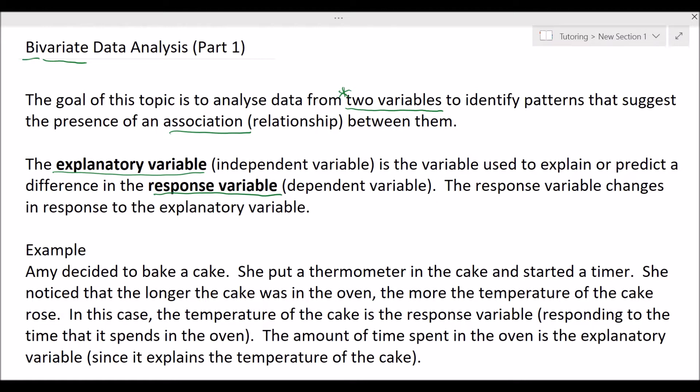To help explain that, here's a little example. Amy decided to bake a cake. She put a thermometer in the cake and started a timer. She noticed that the longer the cake was in the oven, the more the temperature of the cake rose. So the temperature of the cake is the response variable because it's responding to the time spent in the oven — the longer it's in the oven, the hotter it gets. The amount of time in the oven is the explanatory variable.